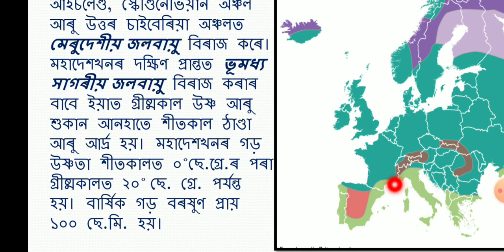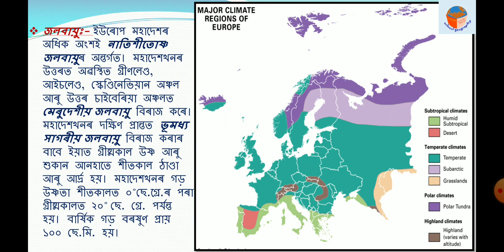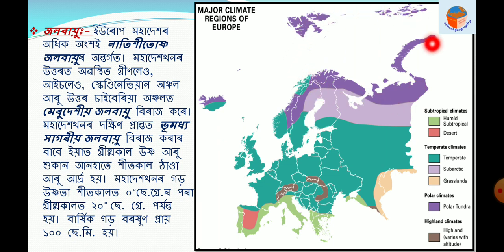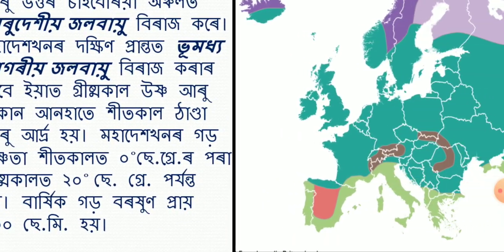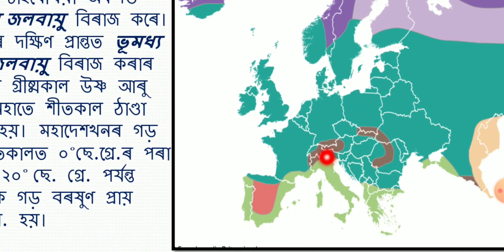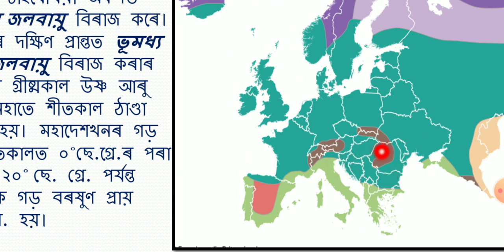This is the sub-tropical area. The detail of the area is the temperate climate. The sub-arctic area is the grassland. This is the polar climate. This is the top-arctic area. This area is the Dinarik area. The Dinarik area is the Caucasian area.